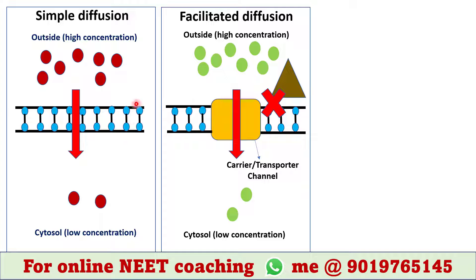Only small and non-polar molecules can easily cross the plasma membrane without any assistance, which occurs in simple diffusion. Like simple diffusion, facilitated diffusion also does not require energy. Both simple diffusion and facilitated diffusion are called passive transport, as they do not require any energy.